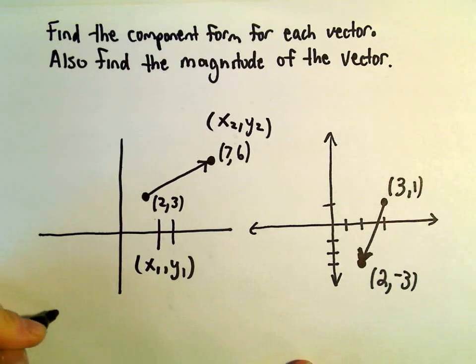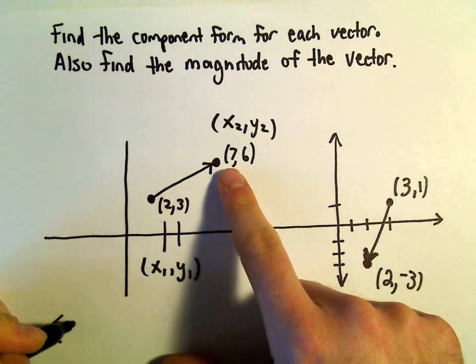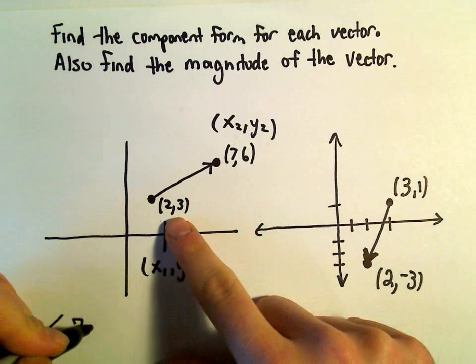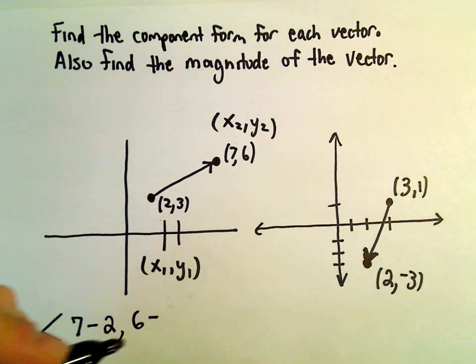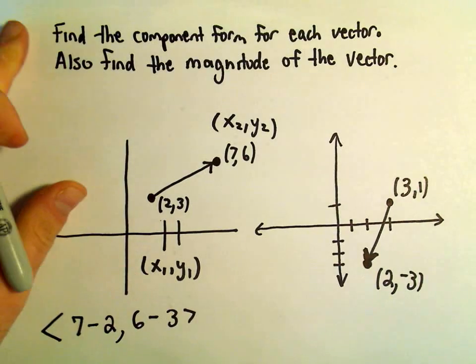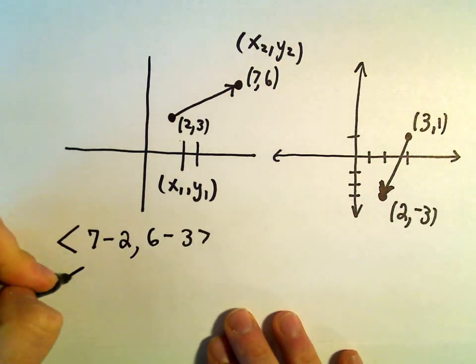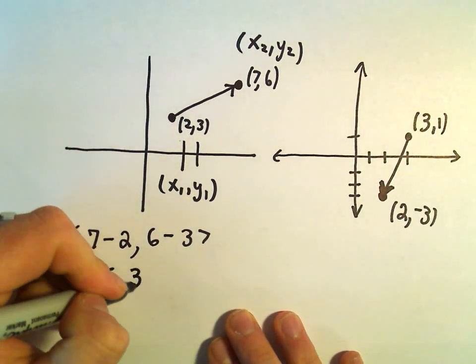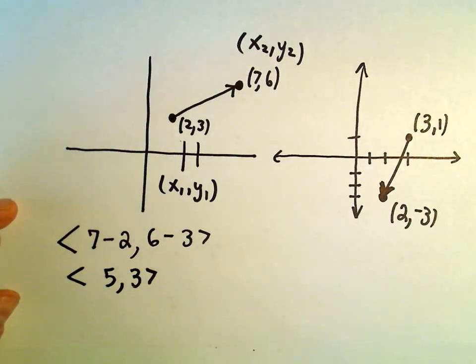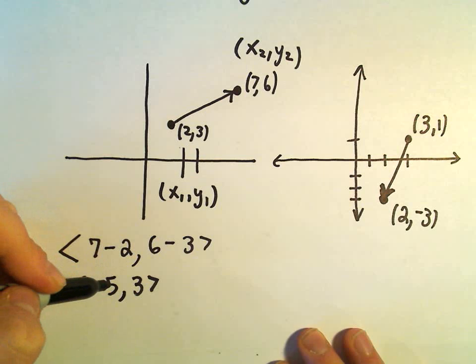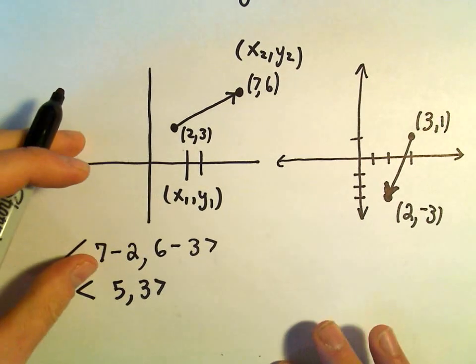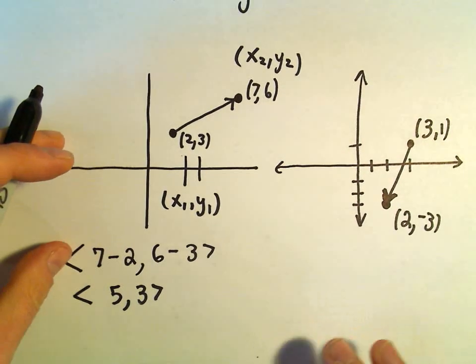So to get the component form, we just subtract x coordinates, you take the finishing minus the starting, we'll do the same thing with the y coordinates, so we'll do 6 minus 3. And if you calculate that, we'll just get 5 and 3, that'll be the component form for this vector. When I think about it, it kind of moves 5 to the right and then 3 up. It's kind of what it's telling me in another way, if you think about it geometrically.